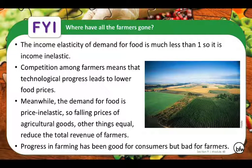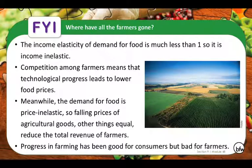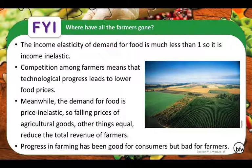Consider the loss of farming in the United States. The income elasticity of demand for food is much less than one — food is income inelastic. Competition among farmers and progress in technology has led to lower food prices, and the demand for food is also price inelastic. So falling prices of agricultural goods, other things equal, reduces the total revenue of farmers, which has pushed many farmers out of the agricultural business. Progress in farming has been good for consumers, but bad for farmers in America.